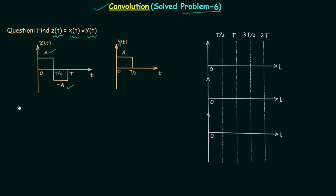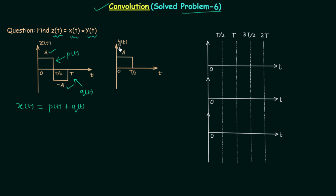We can write signal X(t) as the sum of two signals: P(t) plus Q(t), where P(t) is the signal having only the positive rectangular pulse and Q(t) is the signal having the negative rectangular pulse. So X(t) is the summation of P(t) and Q(t).